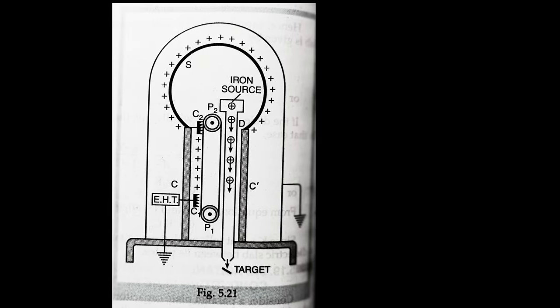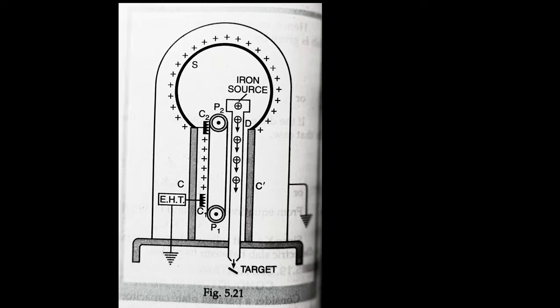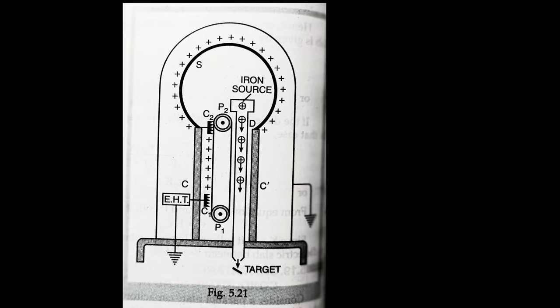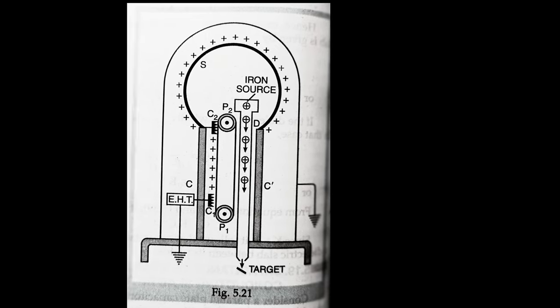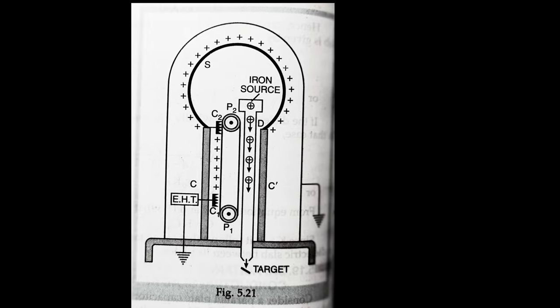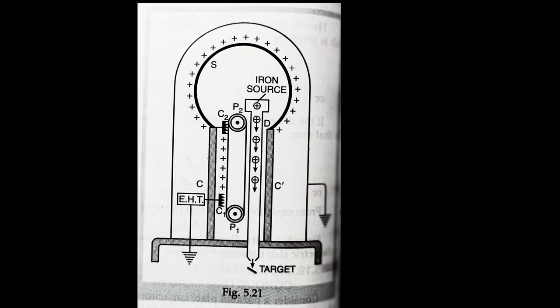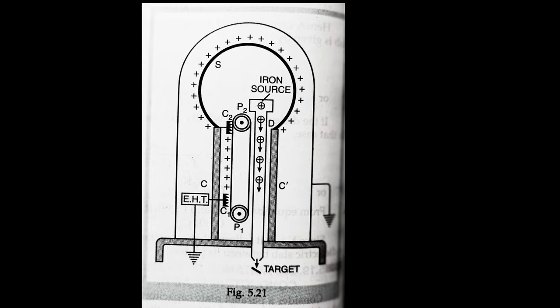These are carried upward by the moving belt. A comb C2, called the collection comb, is positioned near the upper end of the belt such that the pointed ends touch the belt and the other end is in contact with the inner surface of the metallic sphere S.